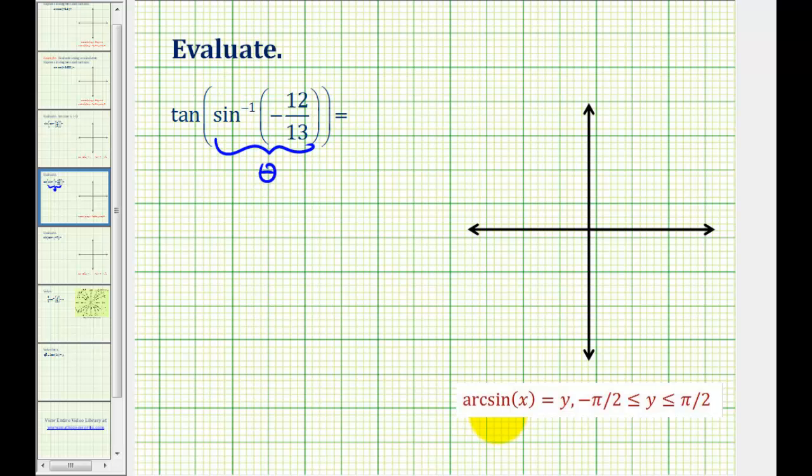And the output or range for arc sine or inverse sine is on the closed interval from negative pi over two to positive pi over two, which means theta must be in quadrant one or quadrant four. But since our sine function value is negative, the terminal side of angle theta must be in quadrant four.